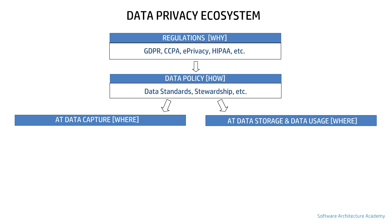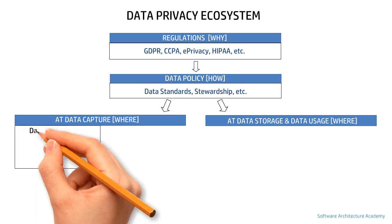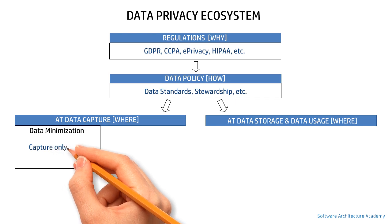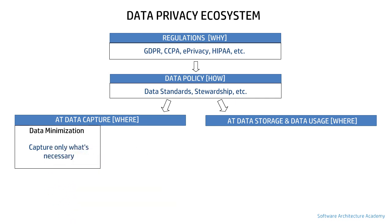The first is data minimization. The objective of an organization should be to capture from an individual only what is absolutely necessary. For example, if name, date of birth, and social security number are must-have essential data, but tax details are good-to-have information, then it is not wise to capture tax details. This is data minimization.